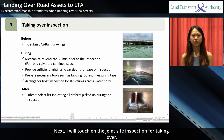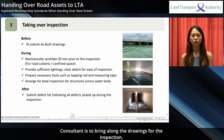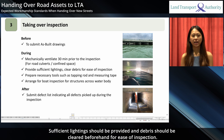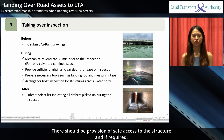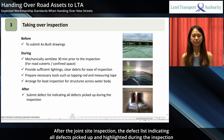For the joint site inspection, as-built drawings are to be submitted when initiating the inspection, and the consultant is to bring along the drawings. For inspection of box culverts, the contractor is to mechanically ventilate the culverts for at least 30 minutes prior to inspection. Sufficient lighting should be provided and debris should be cleared beforehand. Necessary tools such as a tapping rod and measuring tape should also be provided. There should be provision of safe access to the structure, and if required, inspection by boat for structures across water bodies should be arranged. After the joint site inspection, the defect list indicating all defects picked up during the inspection is to be submitted.